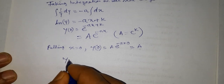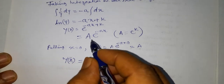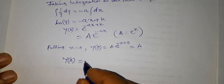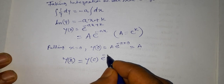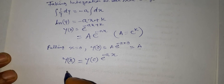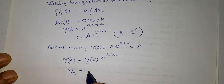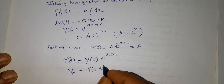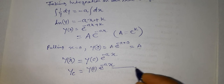Therefore, y(x) — in place of A, that is A, we write y(0) · e^(-ax). Or we may write it as y_c, that is the complementary solution of this differential equation: y_c = y(0) · e^(-ax). That is equation number 2.